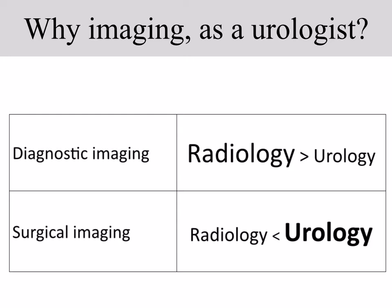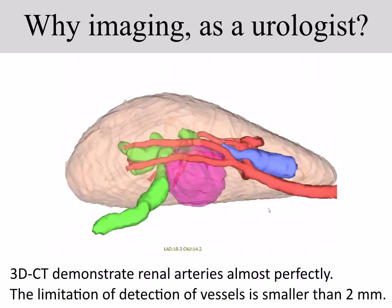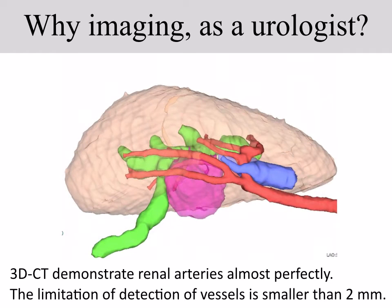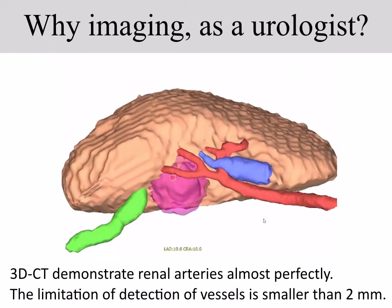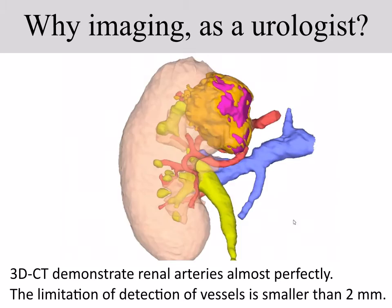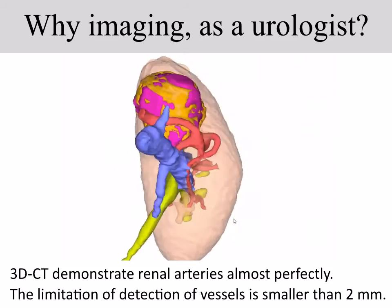However, I think that using advanced imaging devices and proper computational tools, urologists are able to make our own surgical imaging by ourselves. I believe it will bring urological surgery to the next stage. Actually, the kidney is one of the best organs to make surgical planning, because renal CT imaging with contrast provides a quick and accurate renal vascular and urinary tract anatomical image.